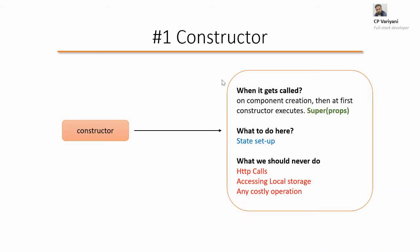The first method which gets executed when you create your component is the constructor. When the component is created, the constructor executes first. You have to call super(props) here - we'll see that in a moment. What you should do in the constructor is create the states for your components. Although you can do it in a different way, if you want to do it in the constructor you can. If you're not using a constructor, React itself will automatically create one behind the scenes and initialize the state there.